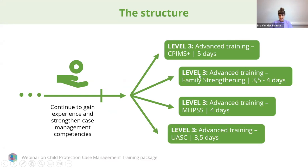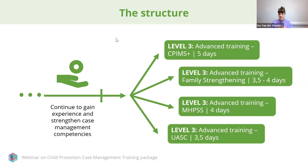Then we arrive at the level three trainings — four optional advanced trainings. We have the CPIMS Plus training of five days, a family strengthening training of three to four days, an MHPSS training of four days, and a training on unaccompanied and separated children providing case management to UASC of three and a half days. The idea is you start with level one, gain experience for a few months, use this to strengthen skills through level two competency-based training, continue working with supervision and coaching, and then undertake these optional advanced trainings.